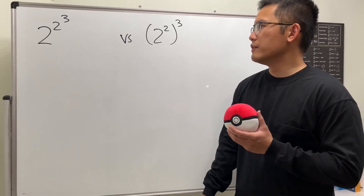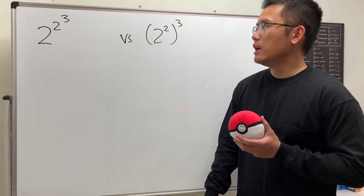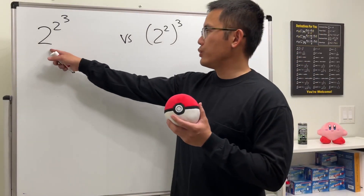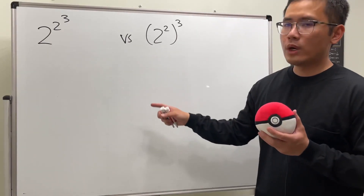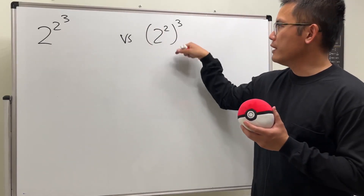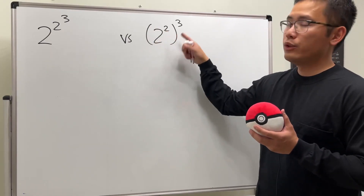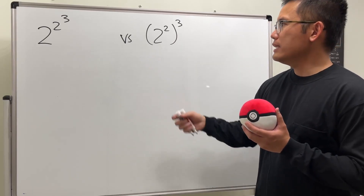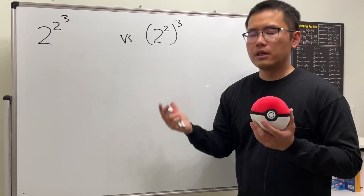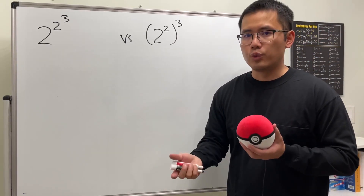Let's take a look at these crazy power questions. The first one is 2 to the 2 to the third power. The second one has parentheses: (2 to the 2) to the third power. Let's do the parentheses one first, because we can work this out from the inside to the outside.